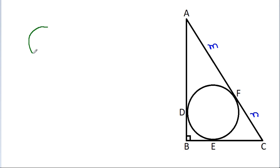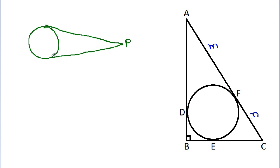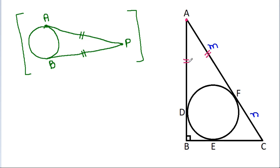In any circle, from any external point P, if we draw two tangents to the circle at points A and B, then PA equals PB. So from point A, AF equals AD, meaning AD is also M. From point C, CF equals CE, so CE is N. From point B, BD equals BE, and we call that X.